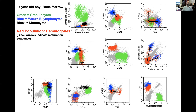The cool thing about hematogones is they will replicate these features almost every time, in every specimen, in every individual. So it is a really useful exercise to know in and out what hematogones look like, and that way you can make a very confident diagnosis of B lymphoblastic leukemia if something deviates from this normal.